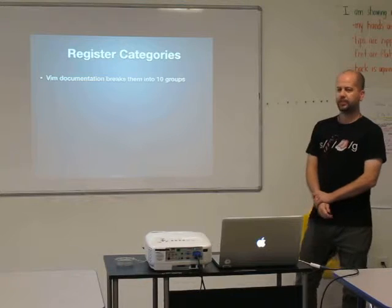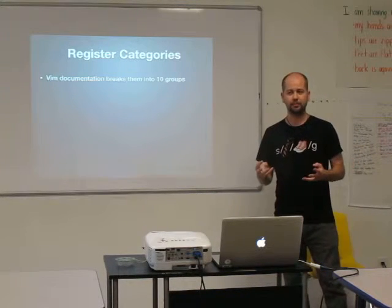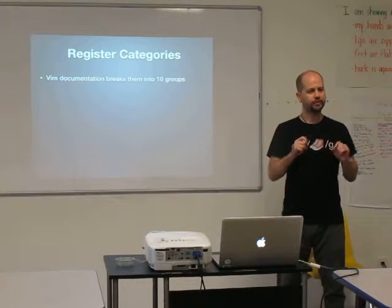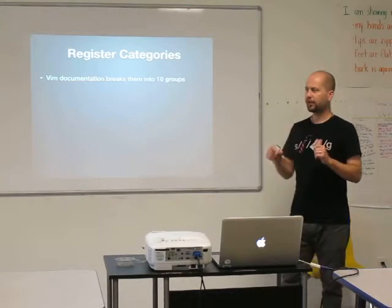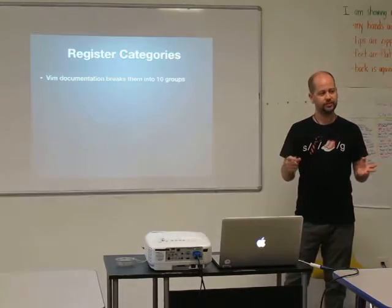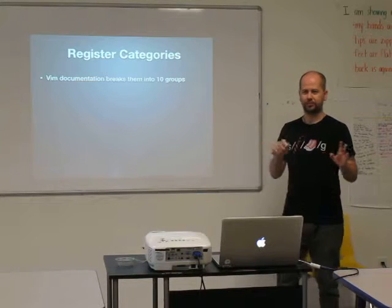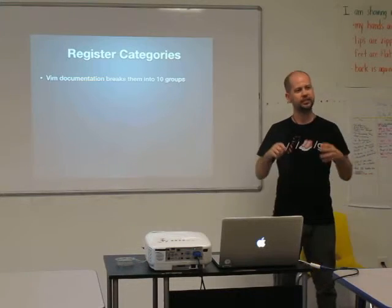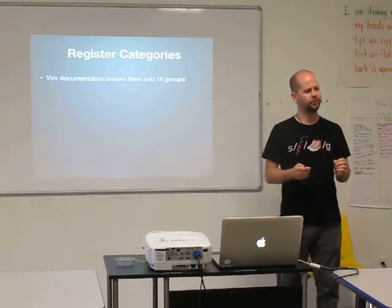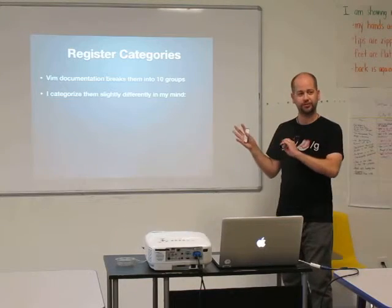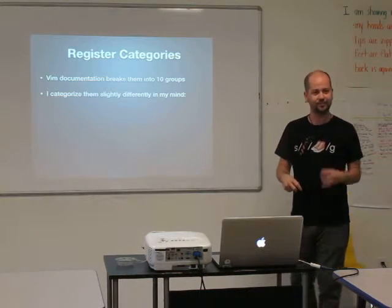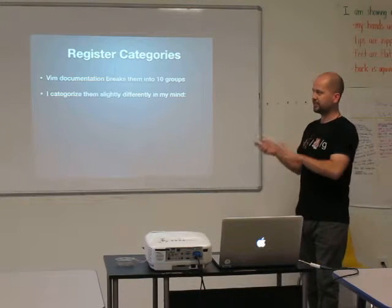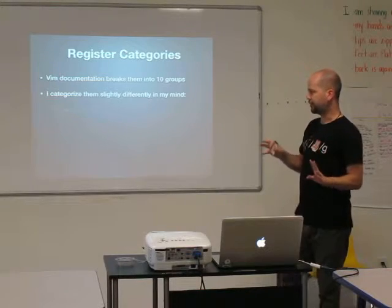VIM actually breaks down the register types in its documentation, because you saw there was the double quotes and then there was the number — those actually refer to two different kinds of registers. VIM breaks them down into ten groups of registers, and I'm not a huge fan of that particular breakdown in the documentation. I think it's more complicated than it needs to be, and I also feel like there's a bit of an overlap. In my mind — and you're free to say I'm crazy — I organize them into about three groups.